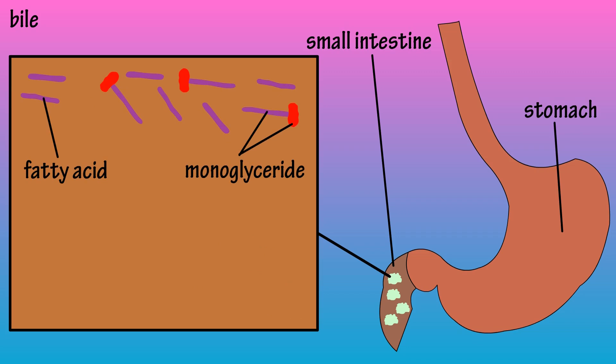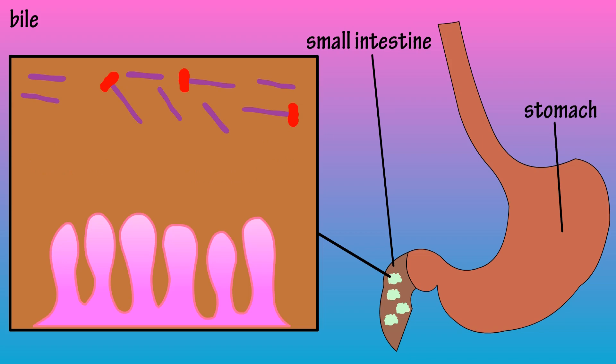These free fatty acids and monoglycerides are now small enough to pass through the epithelial cell layer that covers the villi. Villi are tiny finger-like projections that cover the interior of the small intestinal wall.